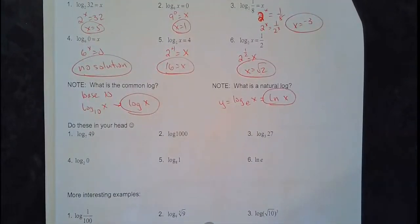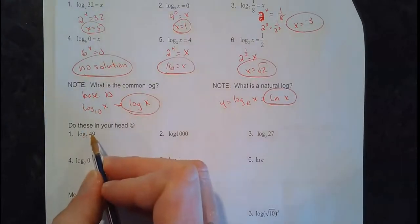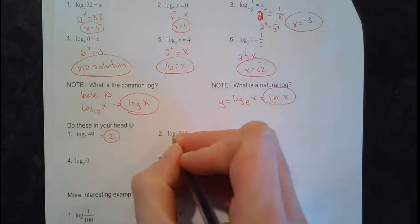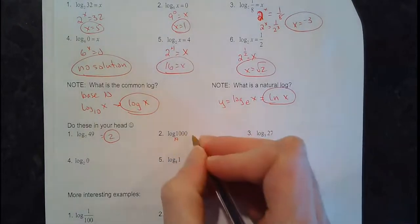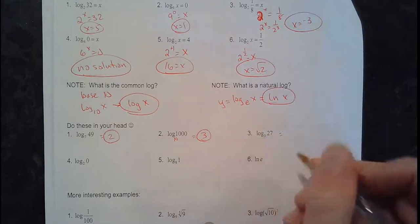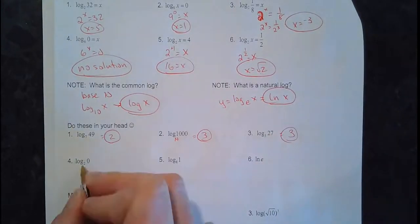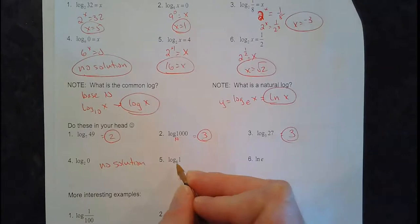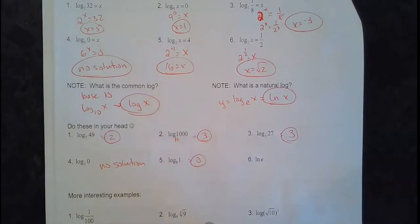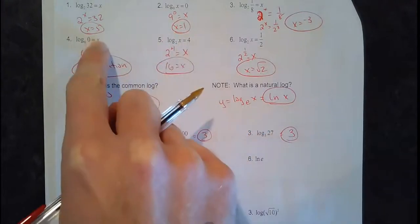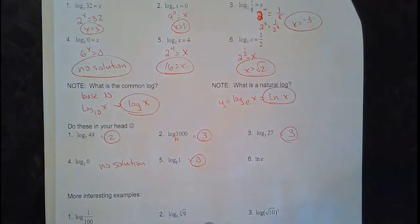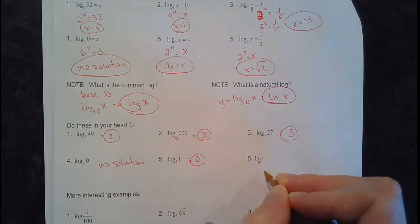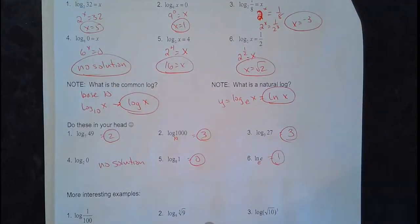Let's do these in our heads. What is log base 7 of 49? That's saying 7 to what power is 49 - that's 2. Here there's no base, so it's 10. 10 to the what power equals 1,000? That's 3. 3 to the what power equals 27? 3. 2 to the what power equals 0? Can't do that - no solution. 8 to the what power equals 1? That must be 0. And the natural log of e - that's saying e to what power equals e - that's 1. So the natural log of e is 1.